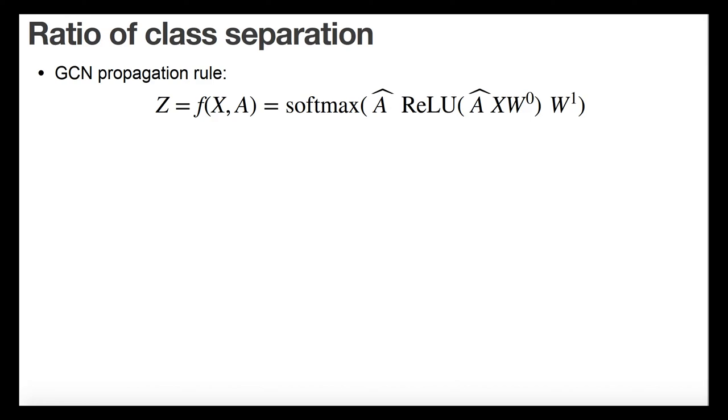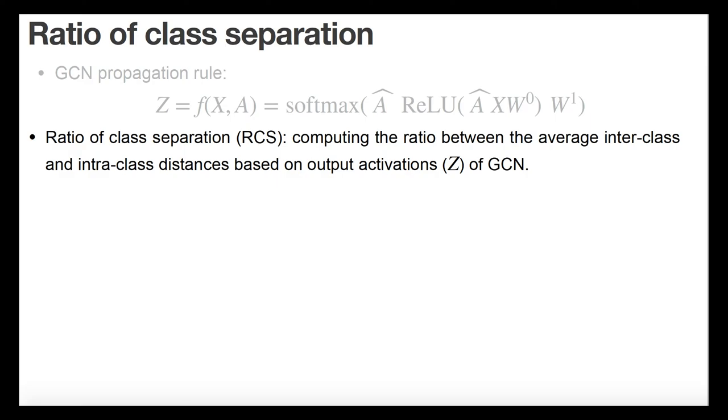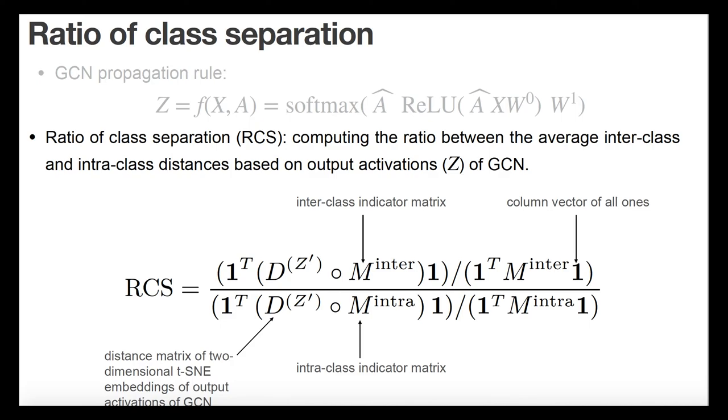Another way of assessing the effect of the constructed graphs on classification is to study the inherent separability of the probabilistic GCN assignment matrix of the output activation Z by the GCN propagation rule. The effect of the graph on Z reflects the quality of the classifier. A good graph should enhance the separation of samples from different classes while clustering together samples from the same class. Here, we quantify the separability of the GCN by mapping the two-dimensional t-SNE embedding of Z, on which we compute the ratio between the average inter-class and the intra-class distances.